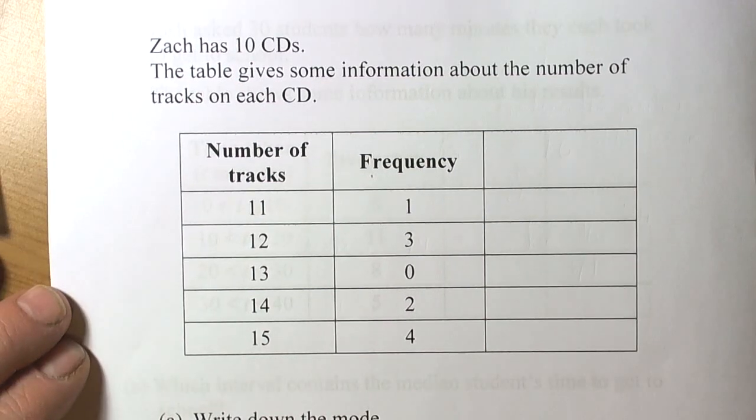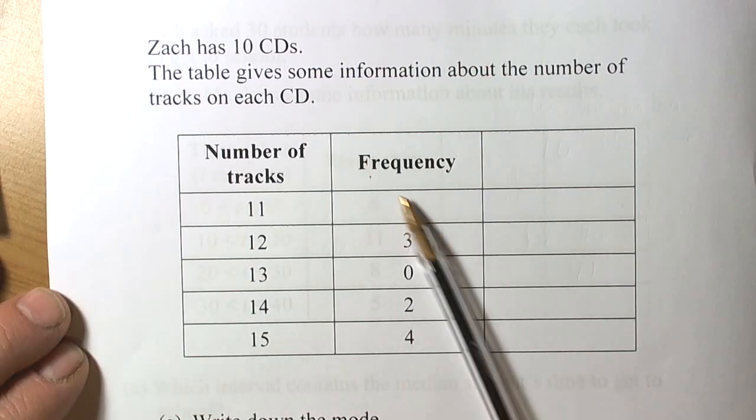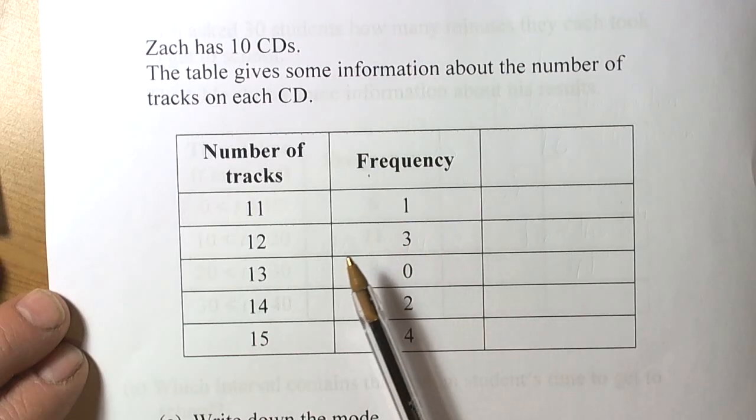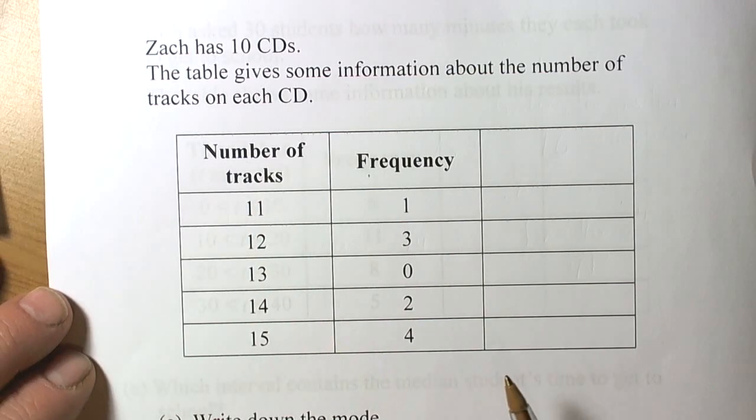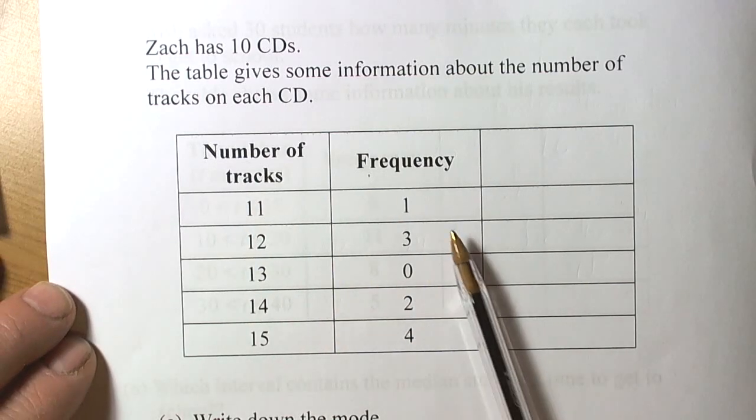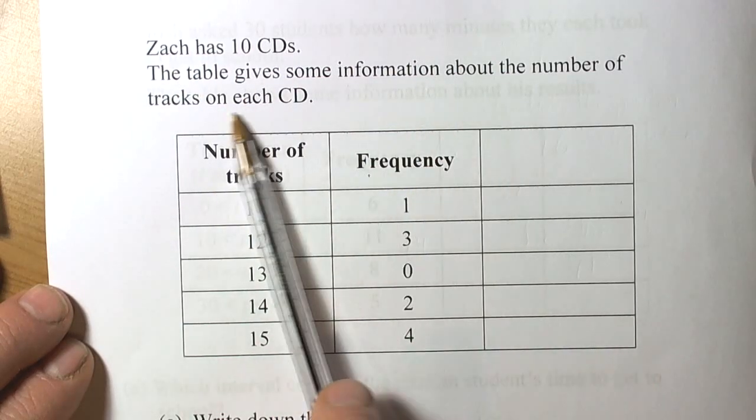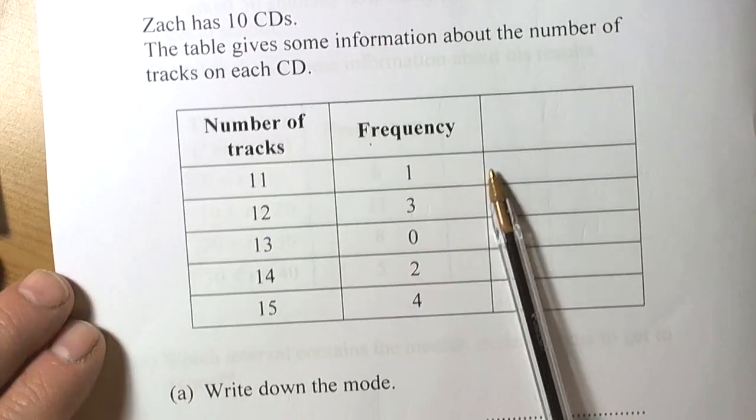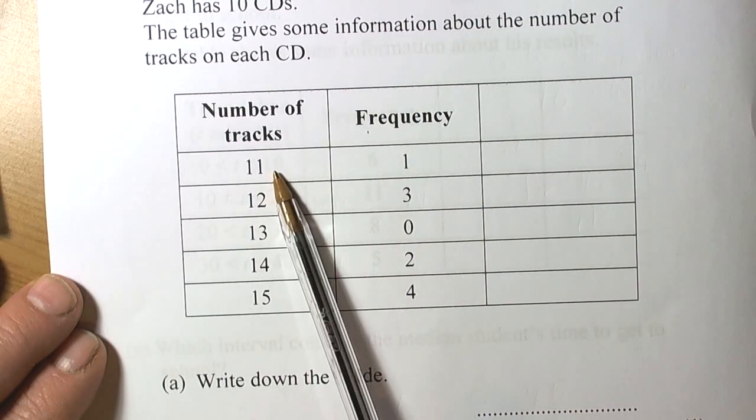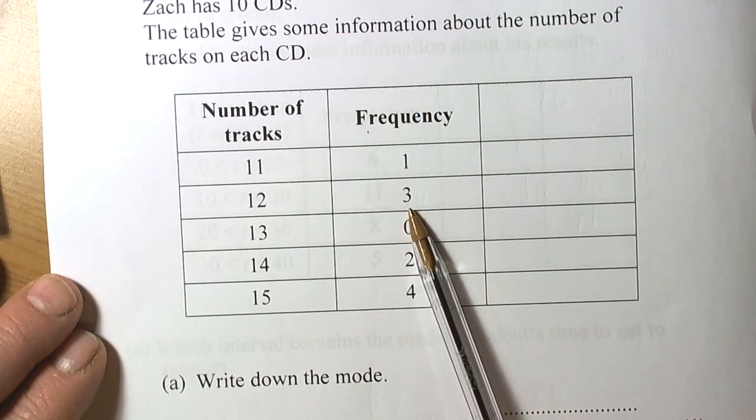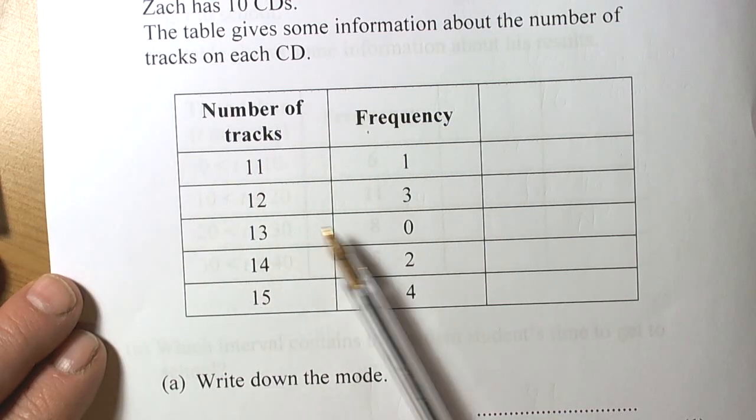At higher grades, questions on averages and range tend to be more complicated because data is given in tables or you have to fill in tables from tally data. Here, Zack has 10 CDs and we're looking at the number of tracks on each CD. Remember how to interpret these tables: one CD has 11 tracks, three CDs have 12 tracks, and so forth.